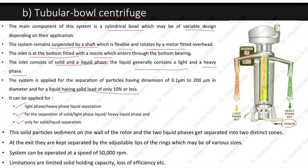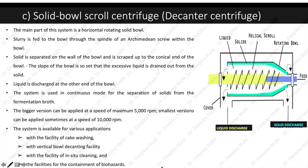Solid particles sediment on the wall of the rotor and the two liquid phases separate into distinct zones. At the exit they are kept separated by adjustable lips of rings, which may be of various sizes, as seen in the diagram. The system can operate at up to 50,000 rpm. Limitations include limited solid holding capacity and loss of efficiency.